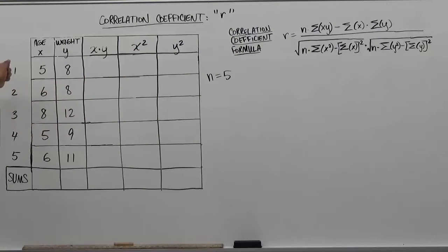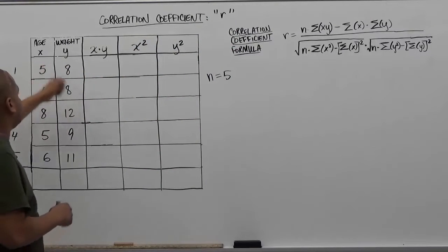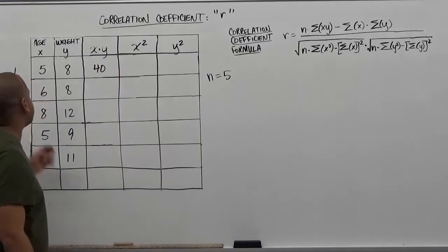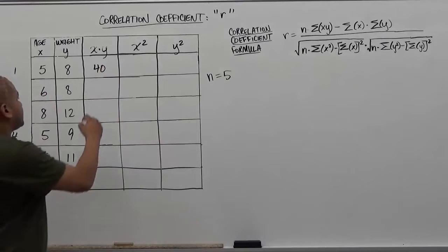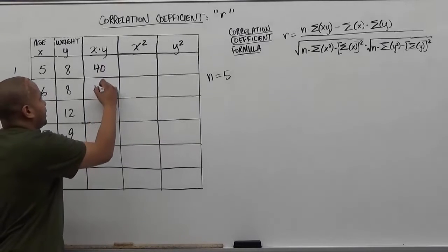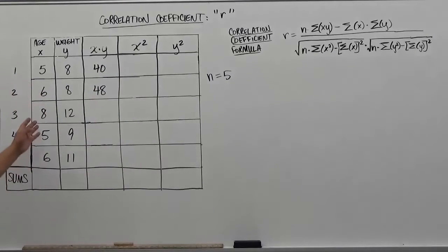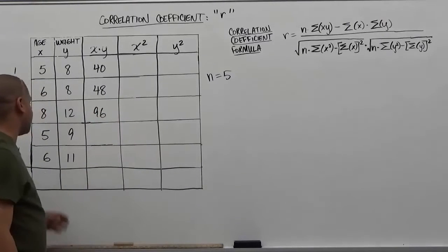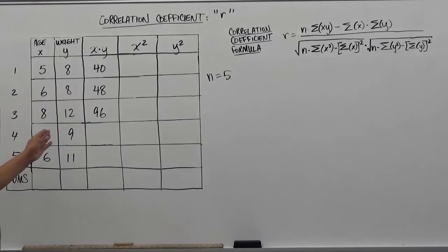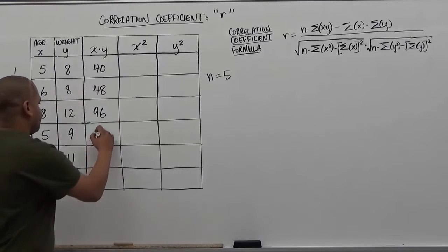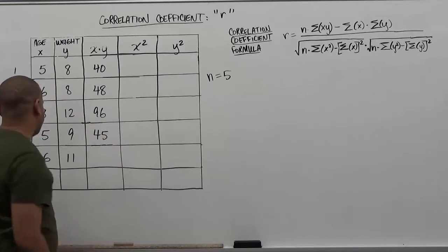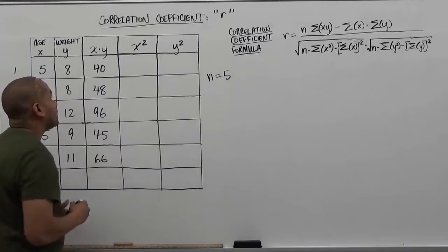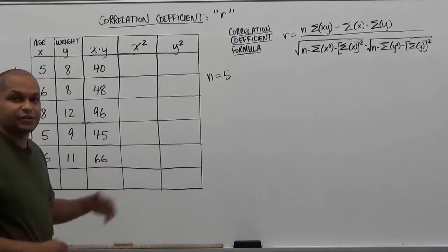Let's begin. Our first sample, we have five and eight, so we're going to do the product of five and eight — that gives us 40. The second sample has six and eight, so six times eight is 48. Our third sample, eight by twelve, which is 96. Our fourth sample is five times nine, which is 45. And our fifth sample is six by eleven, which is 66. That takes care of the x and y column.